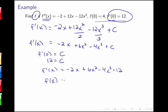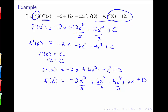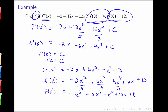My goal is to find f, so I take the antiderivative again: negative 2x squared over 2 plus 6x cubed over 3 minus 4x to the 4th over 4 plus 12x plus some constant d. Simplifying: f of x equals negative x squared plus 2x cubed minus x to the 4th plus 12x plus d. Using the second piece of information, f of 0 equals 4, plugging in 0 makes all terms vanish except d, so d equals 4. Therefore f of x equals negative x squared plus 2x cubed minus x to the 4th plus 12x plus 4.